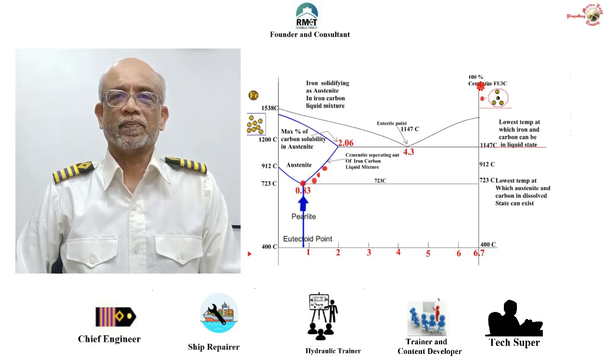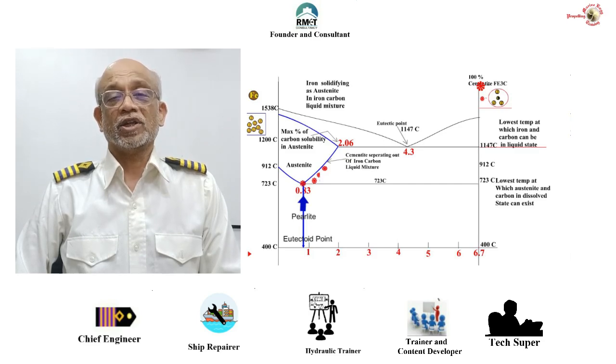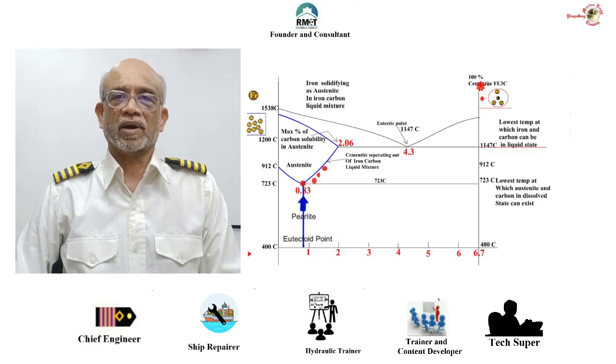We will proceed to see what is hyper eutectic steel, what is hypo eutectic steel, what is perlite, and then we will proceed to complete the understanding of the iron carbon diagram.